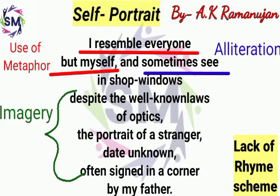Let's talk about the summary or line-by-line explanation of what has been told in this portrait. The lines are on the screen: 'I resemble everyone but myself, and sometimes see in the shop window, despite the well-known laws of optics, the portrait of a stranger, date unknown, often signed in a corner by my father.'